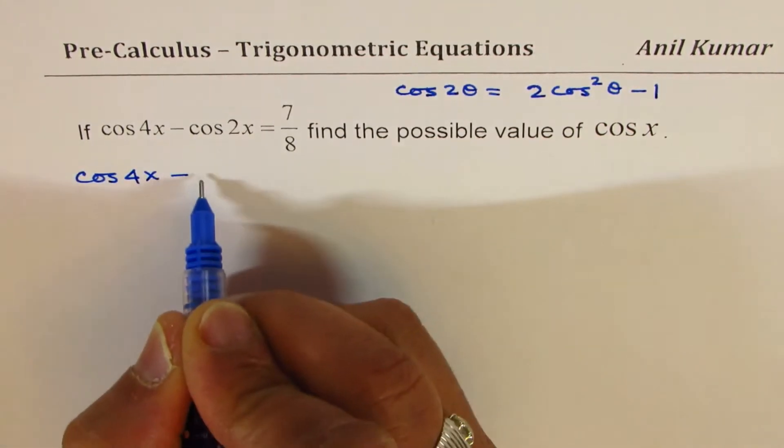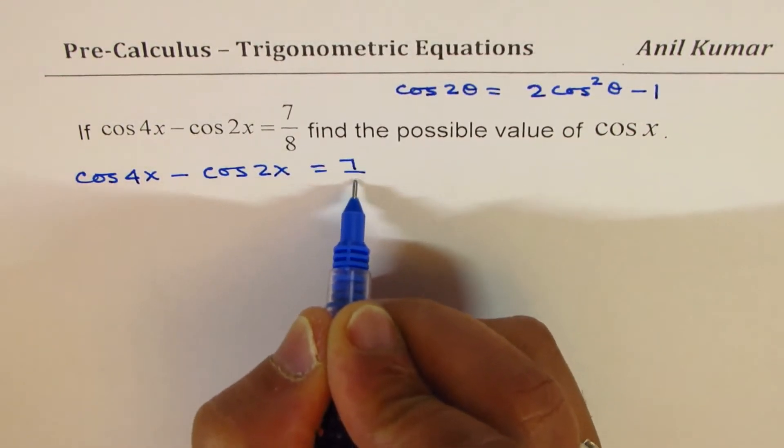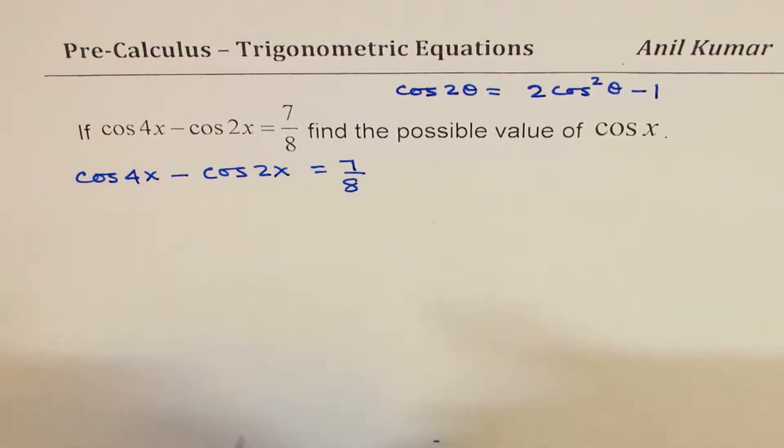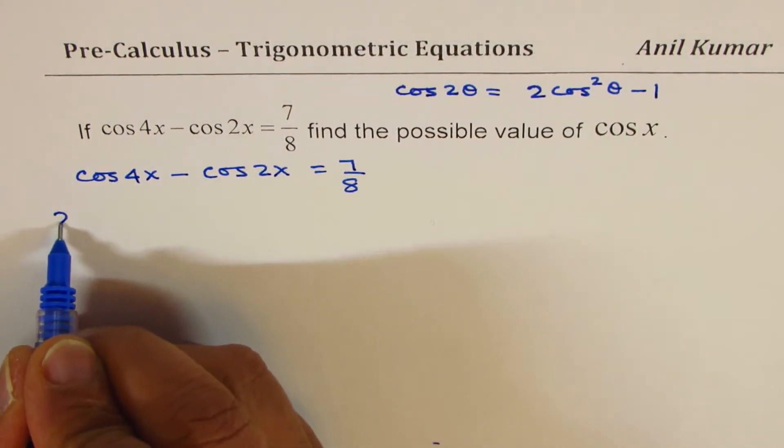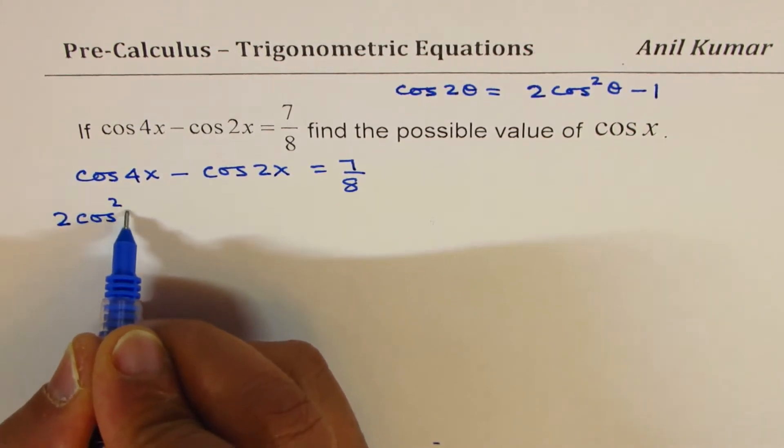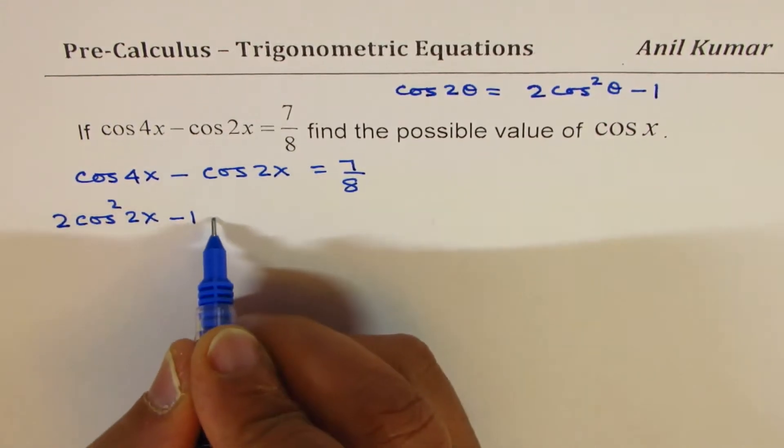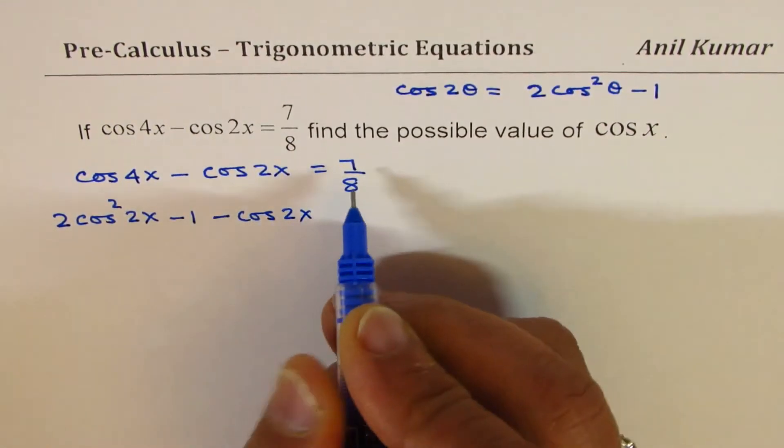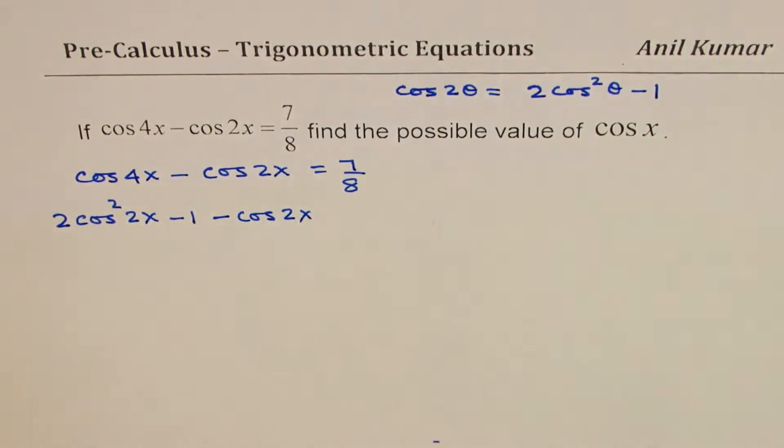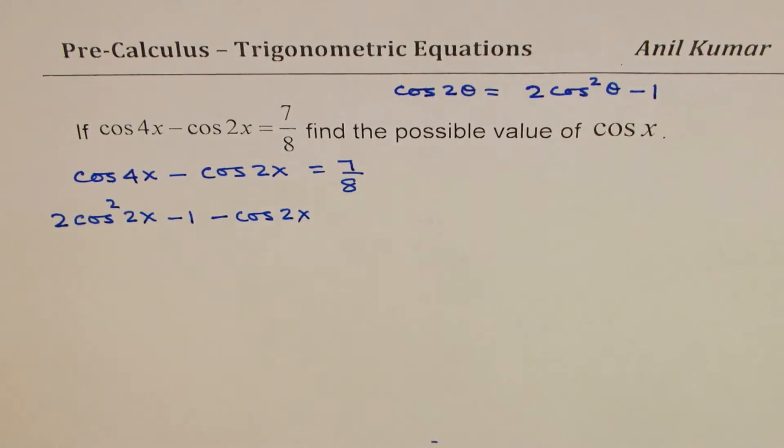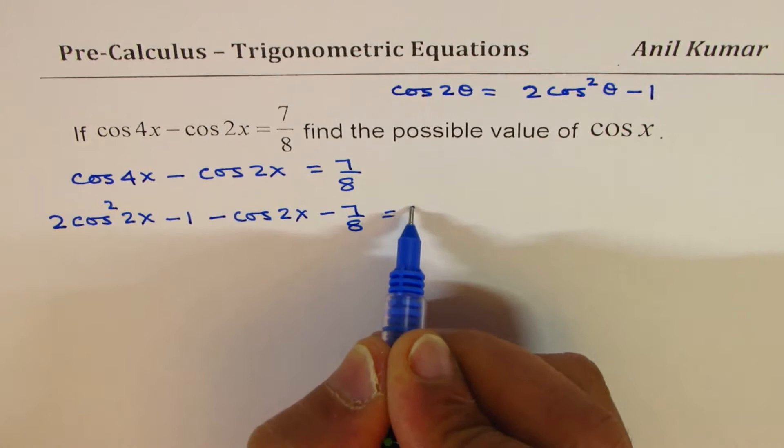Let me rewrite the equation first. Cos 4x minus cos 2x equals 7 over 8. Cos 4x can be written as 2 cos² 2x minus 1, and we already have minus cos 2x here. We will bring 7 over 8 to the left side, so we get minus 7 over 8 equals 0.